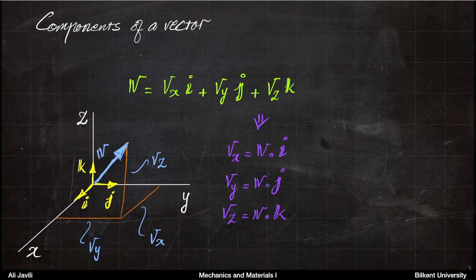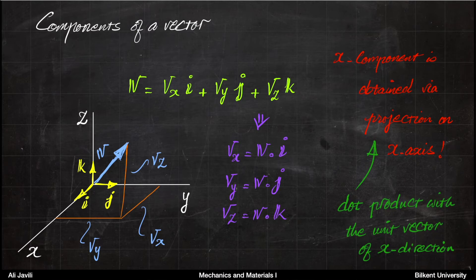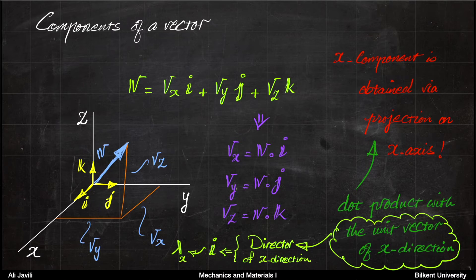The same holds for V_y and V_z. So as a warm-up: the X component is determined via projection onto the X axis. The projection onto the X axis is nothing but the dot product with the unit vector of the X direction. We call that the director of the X direction — we usually call it î in our notation, or lambda_x. Lambda is our notation for a director, and it can be along any axis; in this case it is along the X axis.